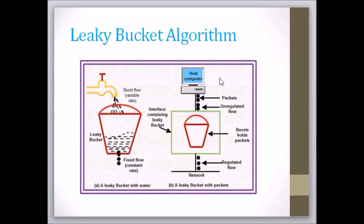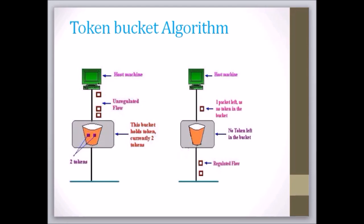Let's see the token bucket algorithm. The leaky bucket algorithm described before enforces a rigid pattern at the output stream, irrespective of the pattern of the input. For many applications, it is better to allow the output to speed up somewhat when a larger burst arrives than to lose the data. Token bucket algorithm provides such a solution.